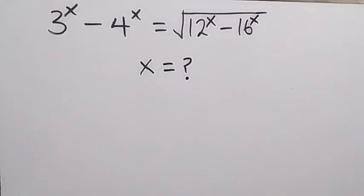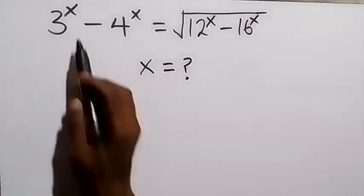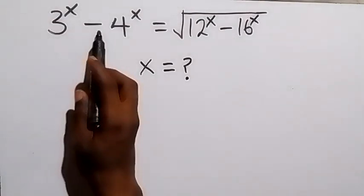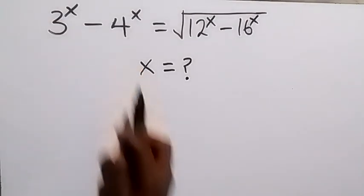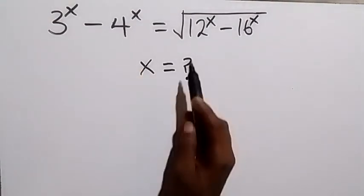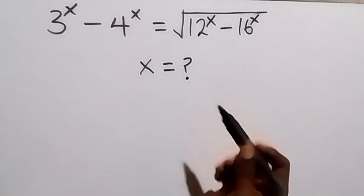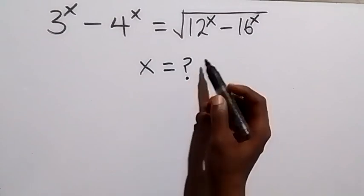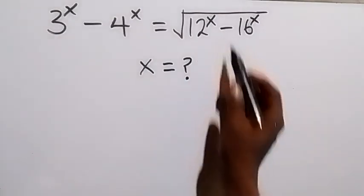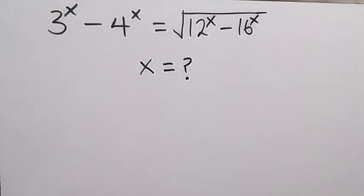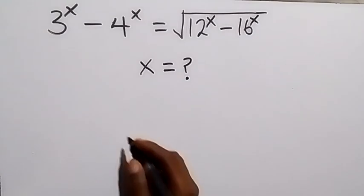Hello, you are welcome. How to solve this nice algebra problem: 3 raised to power x minus 4 raised to power x equals the square root of 12 raised to power x minus 16 raised to power x.